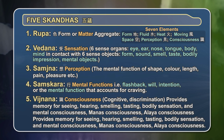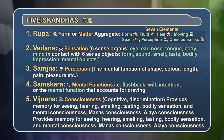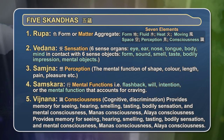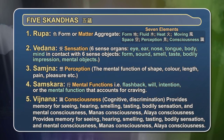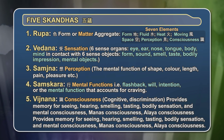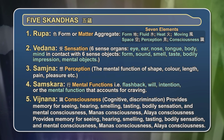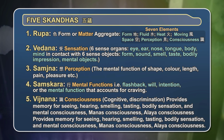Rupa, Vedana, Samjna, Samskara, and Vijnana. We know that the body — its form, or the solidity — includes everything about us: our organs, our senses, our eyes and nose and ears.